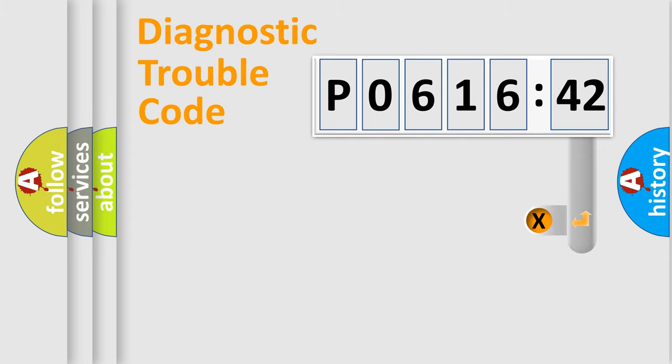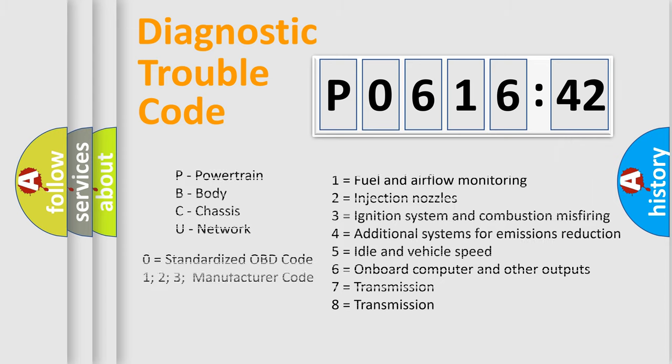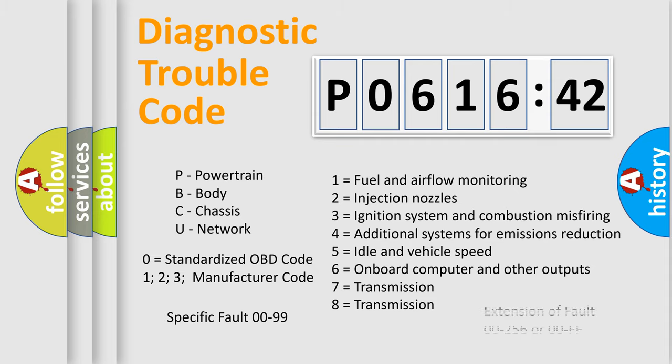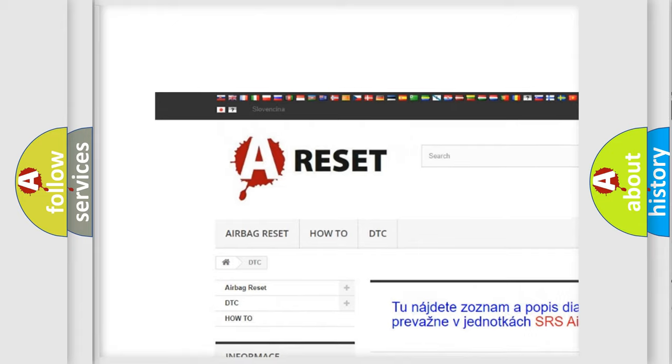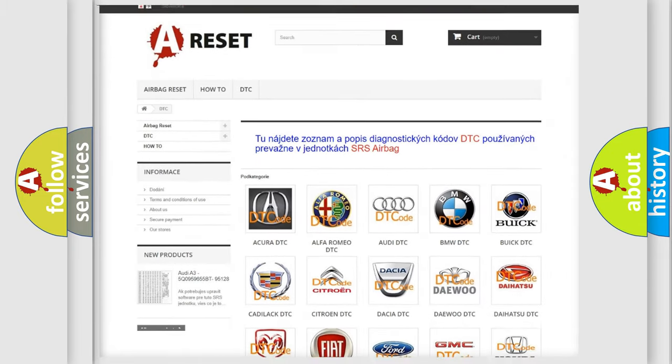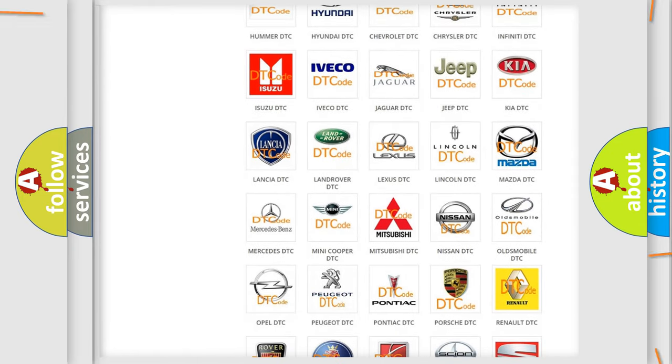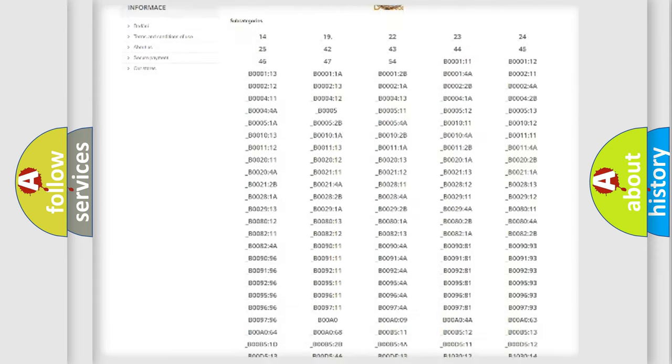Our website airbagreset.sk produces useful videos for you. You do not have to go through the OBD2 protocol anymore to know how to troubleshoot any car breakdown. You will find all the diagnostic codes that can be diagnosed in Nissan vehicles, and also many other useful things. The following demonstration will help you look into the world of software for car control units.